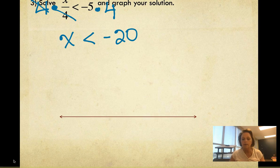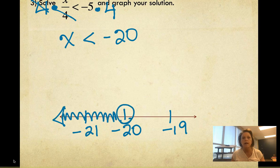So we still don't have to flip our inequality symbol, and we got x is less than negative 20. To graph that, I'm going to put my three numbers there. It's going to be an open circle and I'm going to shade to the left.